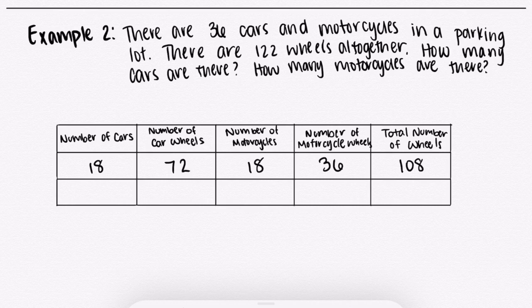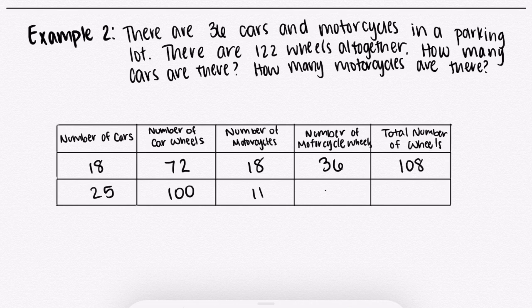Since each car has two more wheels than each motorcycle, we will need seven more cars to gain 14 more wheels. So if we add seven more cars, we get 25 cars, and we take away seven motorcycles, leaving 11 motorcycles. From 25 cars we get 100 wheels, and from 11 motorcycles we get 22 wheels. Adding them up gives 122 wheels, which shows the correct combination is 25 cars and 11 motorcycles.